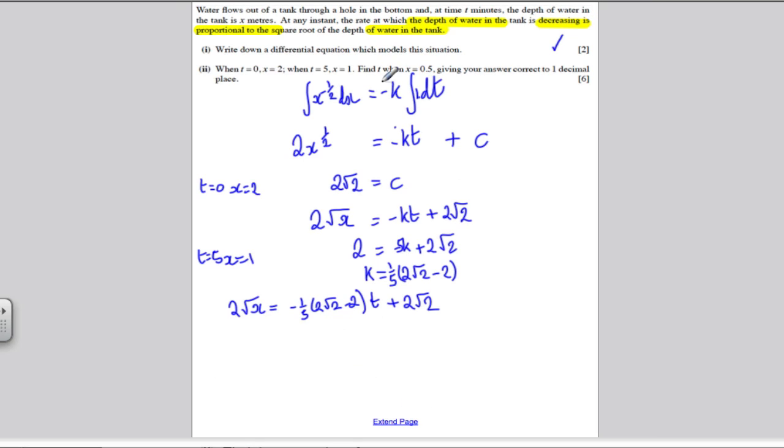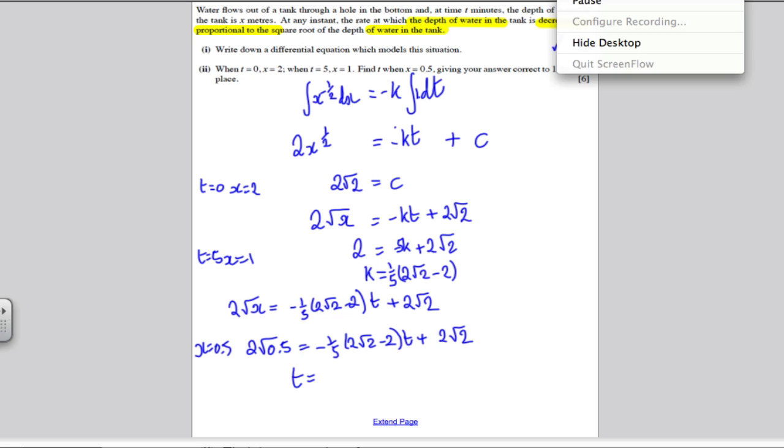They want us to find t when x is a half, correct to one decimal place. So putting in x is 0.5, we are getting 2 times the square root of 0.5 is equal to minus a fifth times 2 root 2 minus 2t plus 2 root 2. Work out this side, subtract 2 root 2, and then divide by minus a fifth times 2 root 2 minus 2, and you'll get your answer for t. So plug that all into your calculator. You'll get t is equal to 8.5 minutes, and that is rounded to one decimal place.